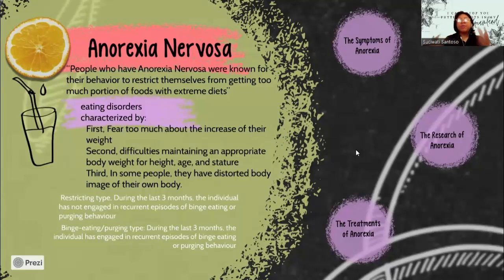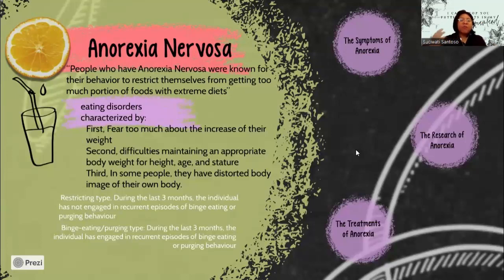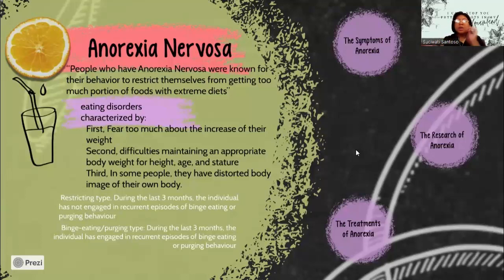DSM-5 also includes two types of anorexia nervosa. The first is the restricting type: during the last three months, the individual has not engaged in recurrent episodes of binge eating or purging behavior. Weight loss is accomplished primarily through dieting, fasting, and/or excessive exercise. The second is the binge eating or purging type: during the last three months, the individual has engaged in recurrent episodes of binge eating or purging behavior.